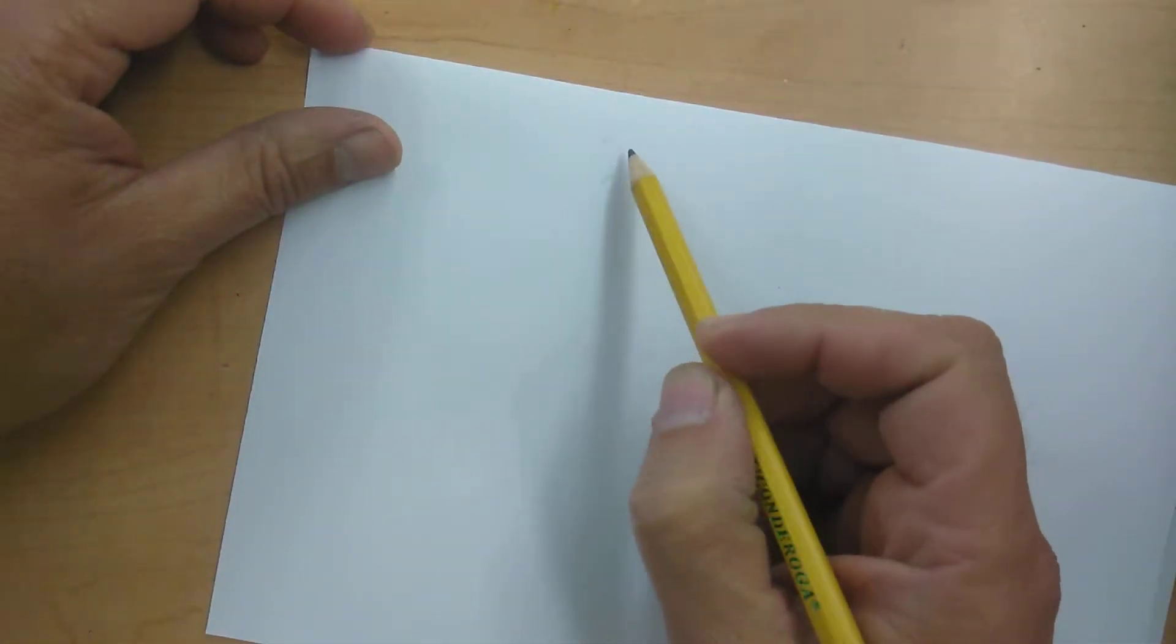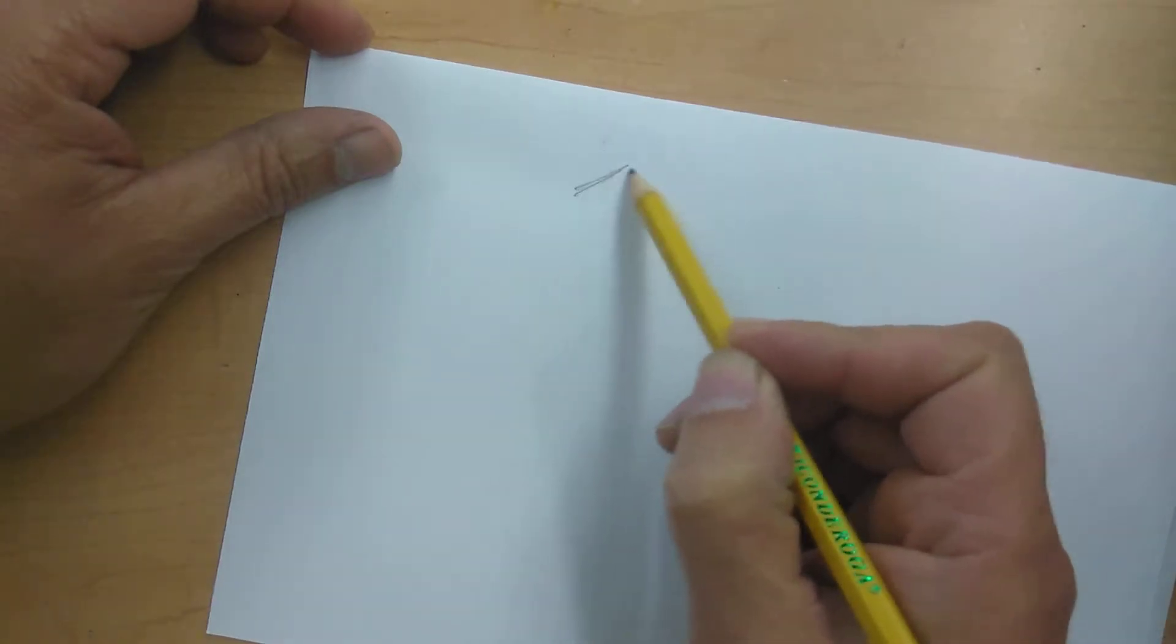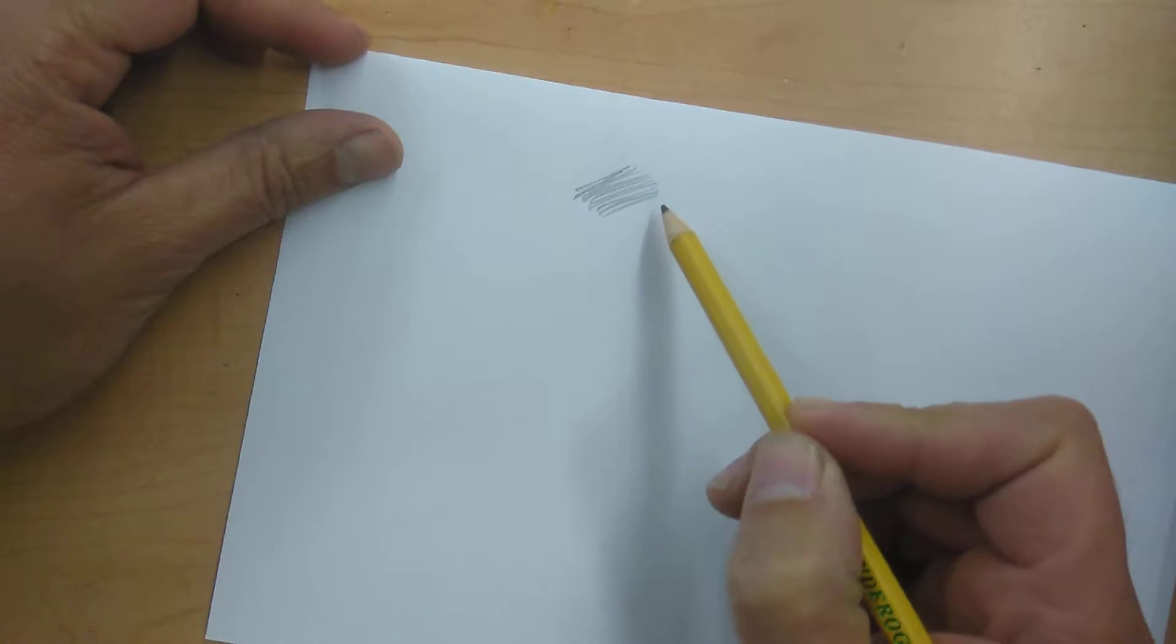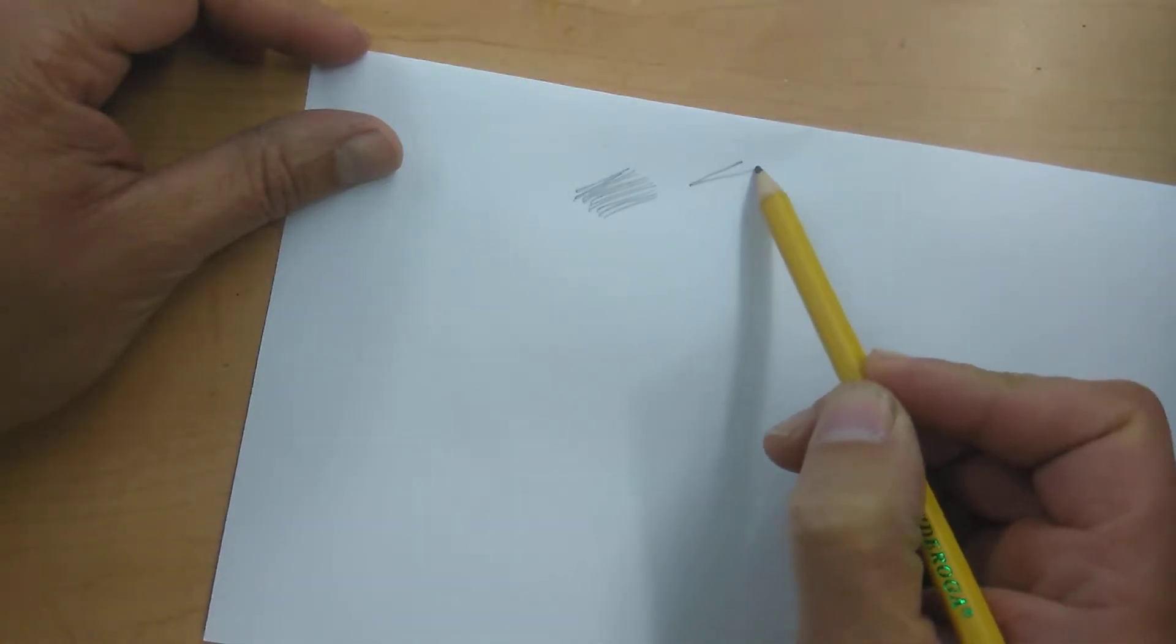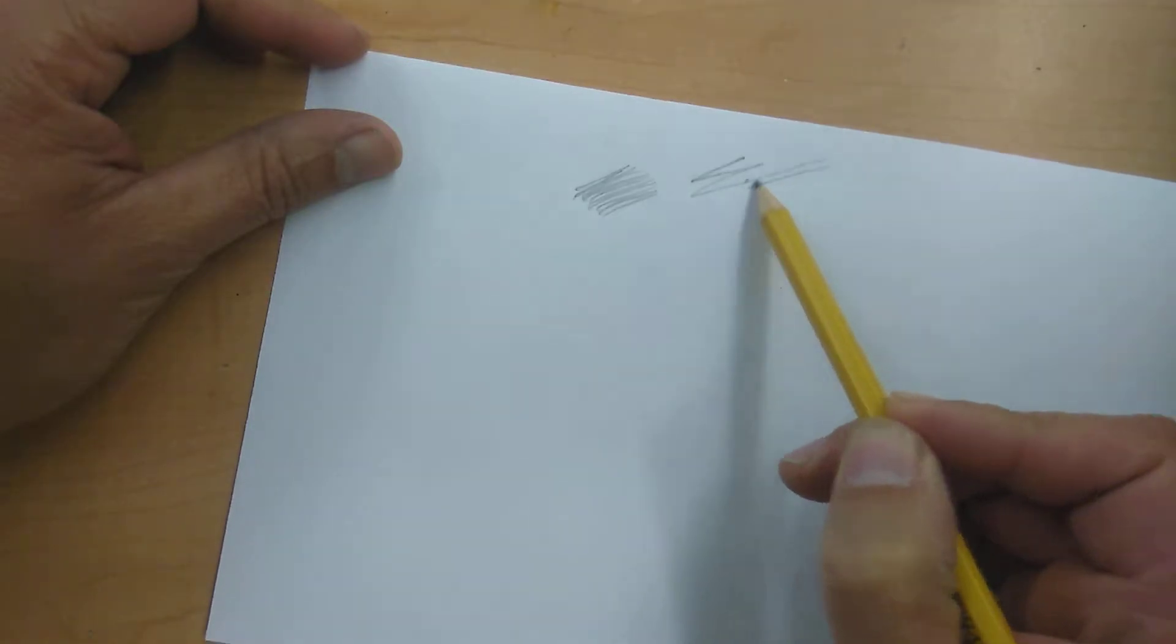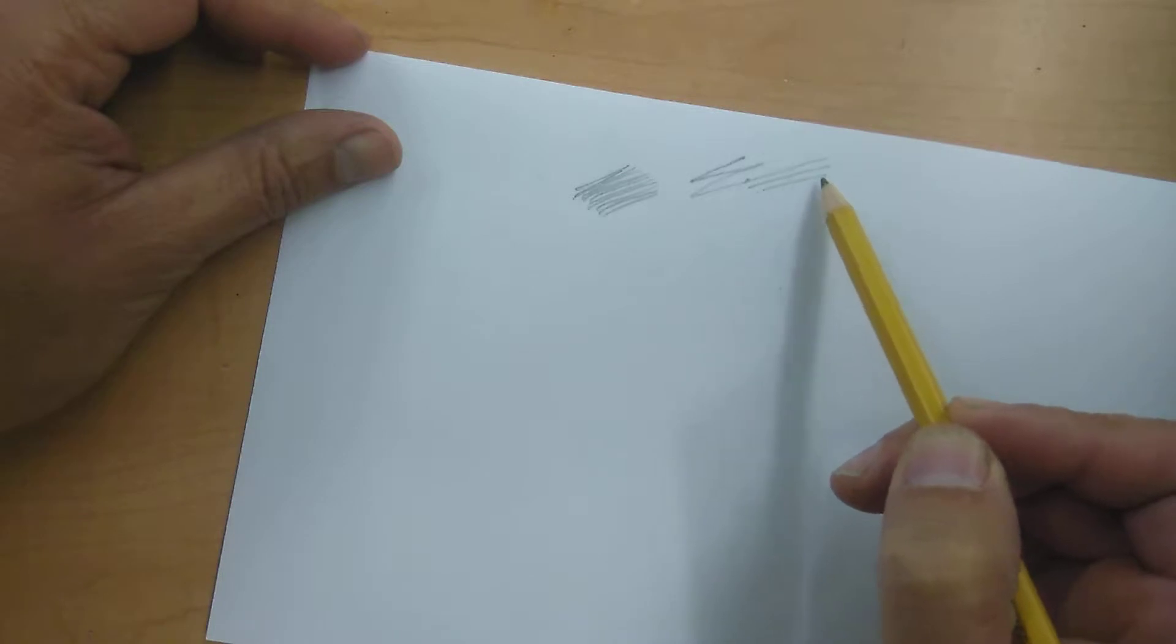Hatching, what you're doing is making a whole bunch of marks running in one direction. You'll notice that it's not a zigzag. I'm not going back and forth like this. What I'm doing is I'm making a line, lifting my pencil, making another line, lifting up my pencil, and another line.